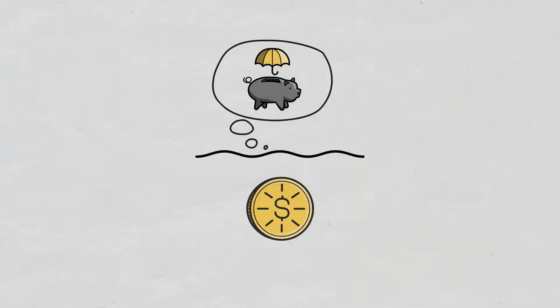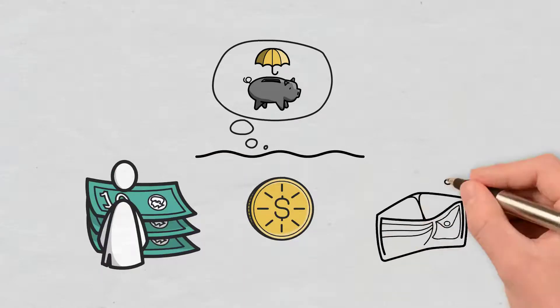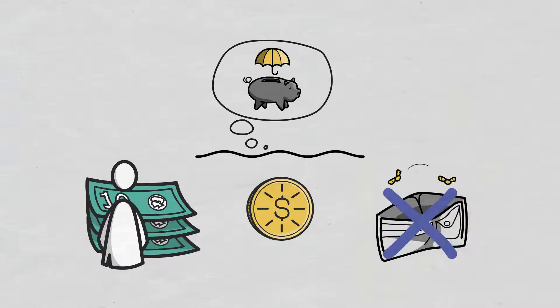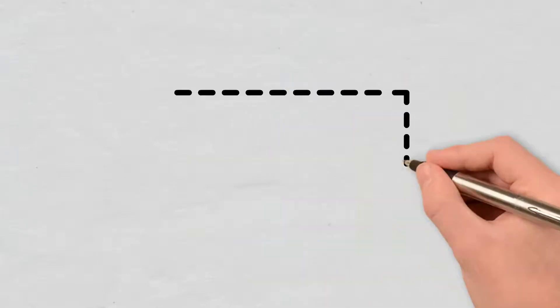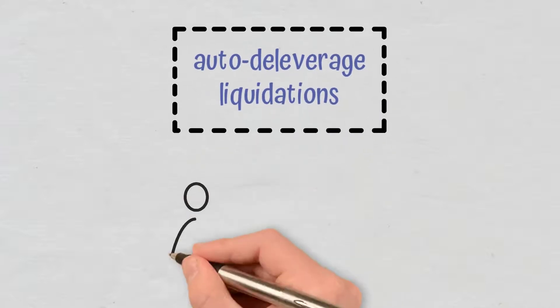Simply put, exchanges use and maintain them to make sure that profitable traders receive their profits in full and to prevent traders from bankruptcy in the event of liquidations. Their primary purpose is to avoid auto-deleveraged liquidations or counterparty liquidations.